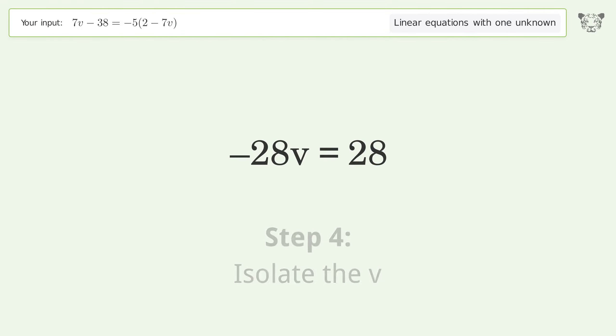Isolate the v. Divide both sides by negative 28. Cancel out the negatives.